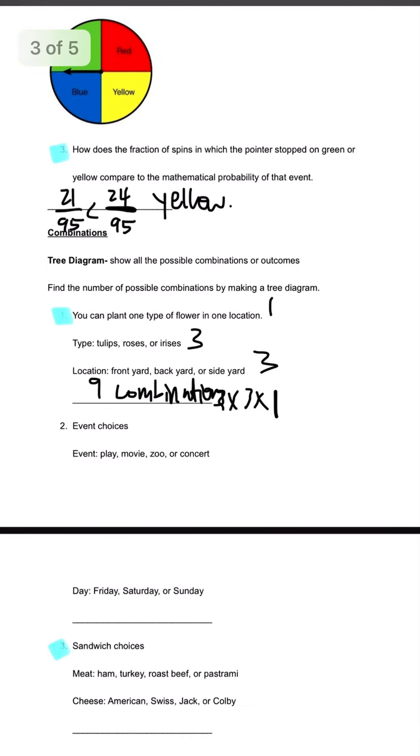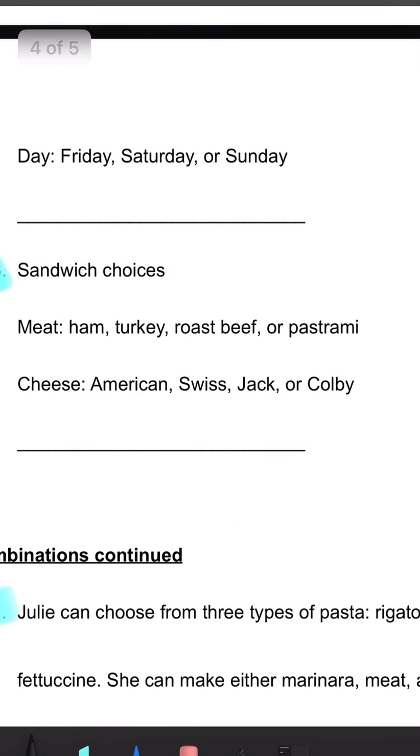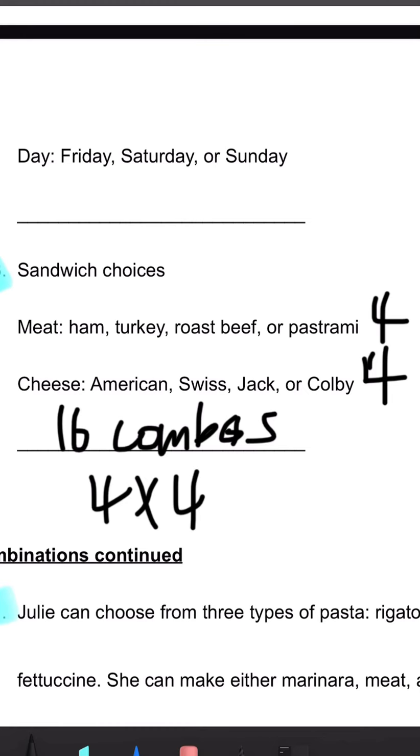Let's look at number three. Sandwich choices. For meat, we have ham, turkey, roast beef, or pastrami. So that is four different types. Cheese, we have American, Swiss, Jack, or Colby. That is four different types as well. So we'll just be doing four times four, which is 16 combos.